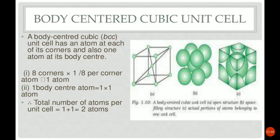Now we will discuss the number of atoms in a body-centered cubic unit cell, or BCC. A BCC has an atom at each of its 8 corners and also 1 atom at its body center. The 8 corners contribute 8 × 1/8 = 1, plus 1 atom at the body center, giving a total of 1 + 1 = 2 atoms.